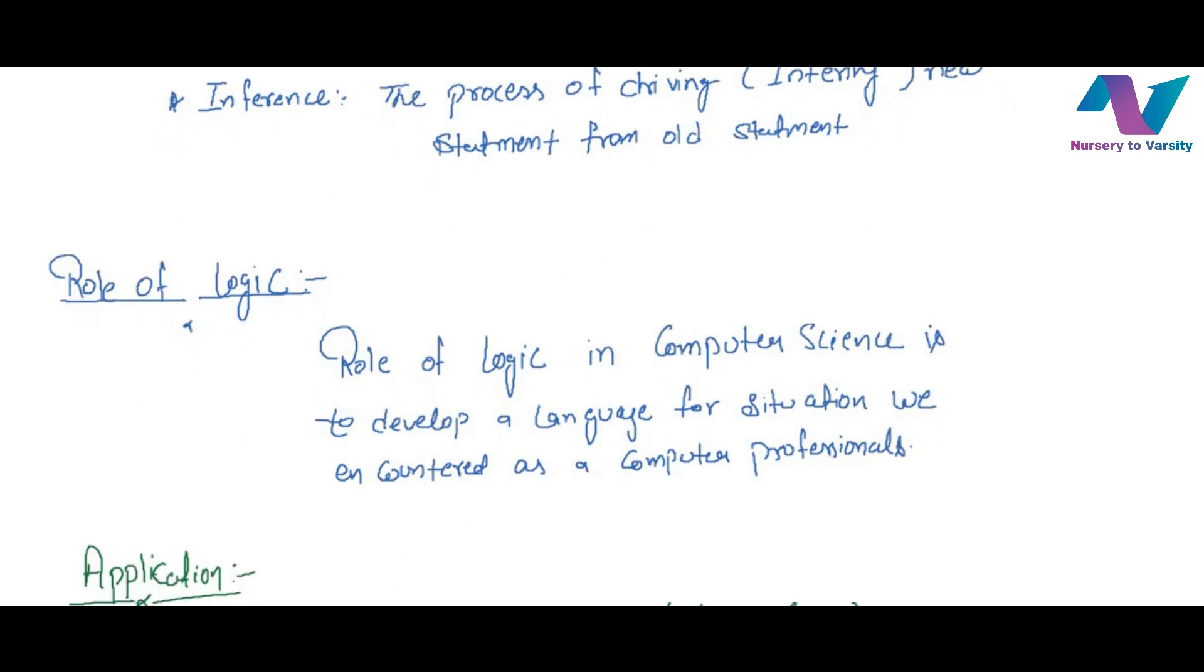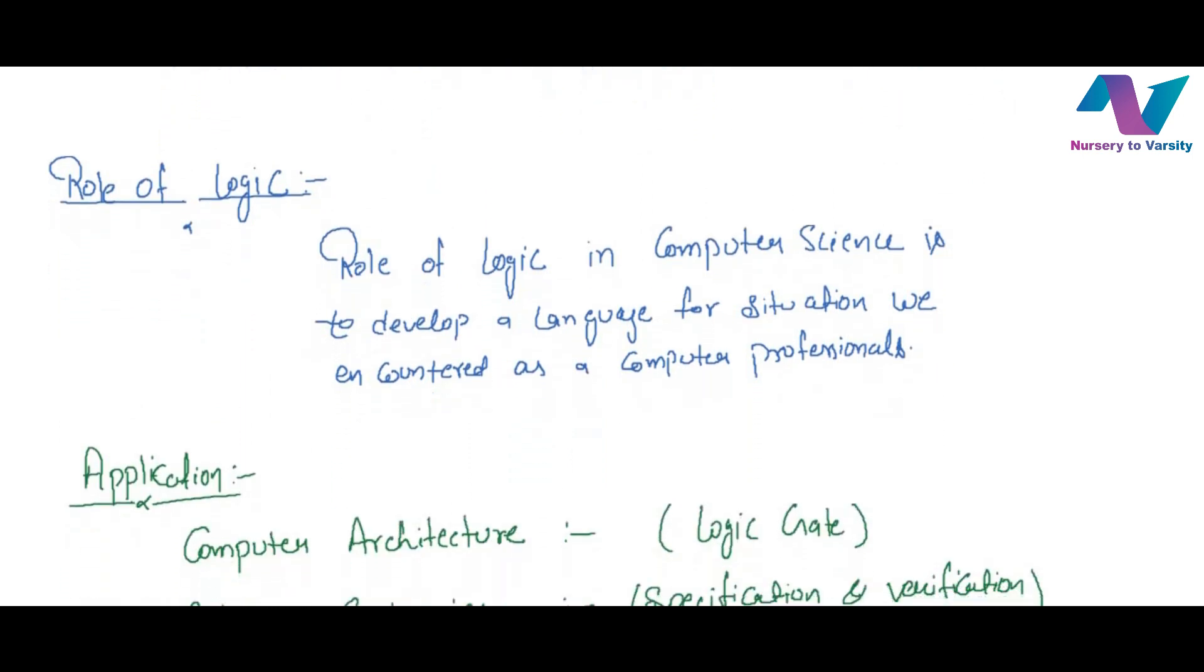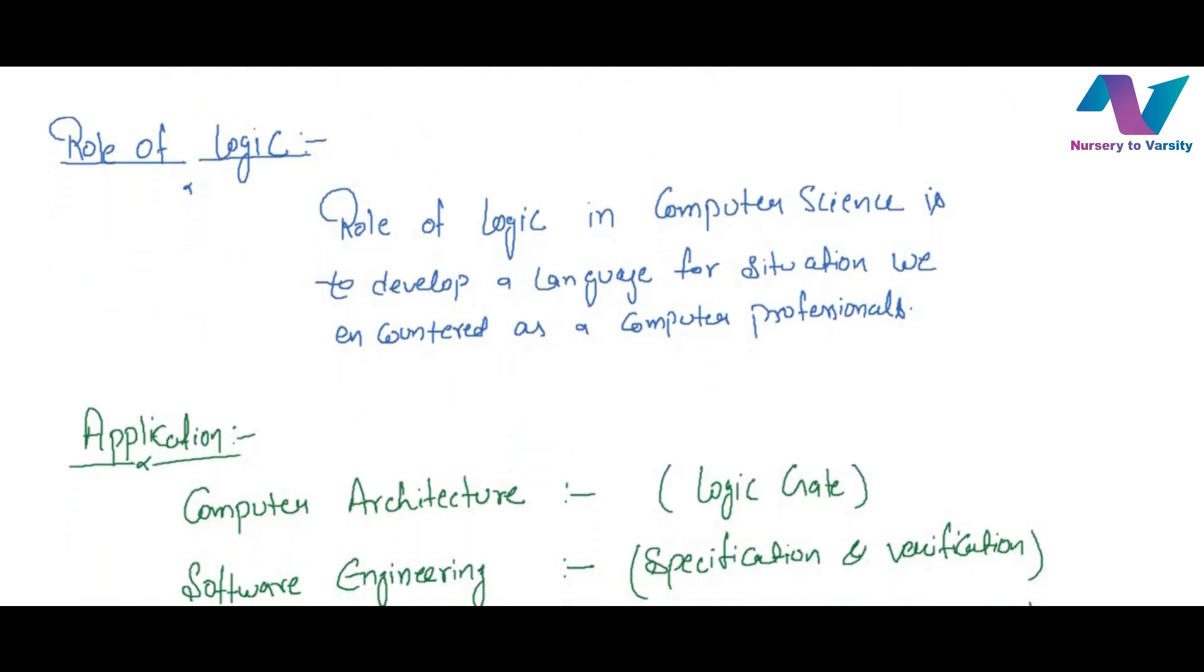Now if we move towards the logic roles in our life from computer professional perspective, logic is to develop a language for situations we encounter in our day to day life, or we can say we are talking about formal languages. Formal languages are needed because logicians were failed to express their feeling in natural language, then they moved towards the formal language.